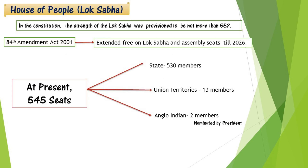Now coming to the House of People, that is Lok Sabha. As per the Constitution, the strength of Lok Sabha should be 552, but through the 84th Amendment 2001, the Lok Sabha strength was frozen until 2026. Currently, Lok Sabha has 545 seats — 530 seats for states, 13 members for Union Territories, and 2 members from Anglo-Indians nominated by the President.